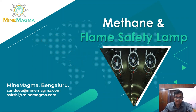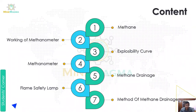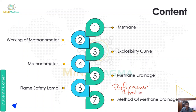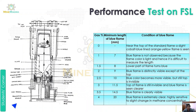So what are we going to cover in this topic? We are going to see two things. First, we have to see a performance test on our flame safety lamp. The second one is methods of methane drainage. So let us start with the performance test on FSL.